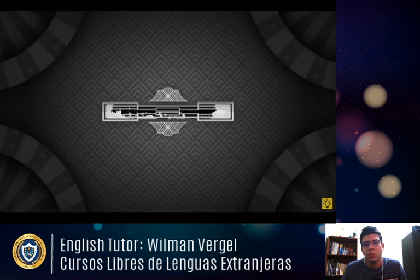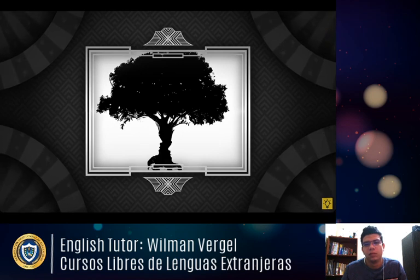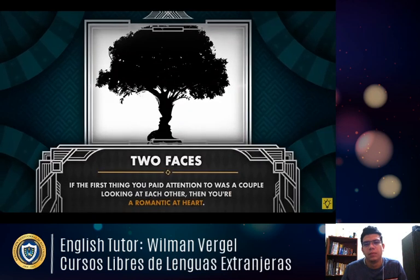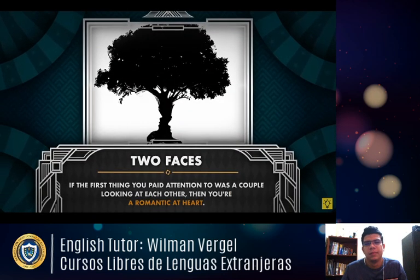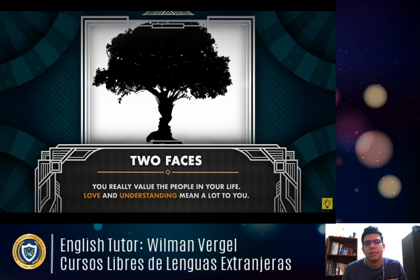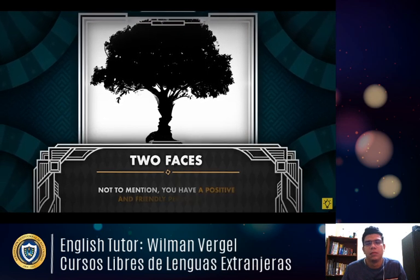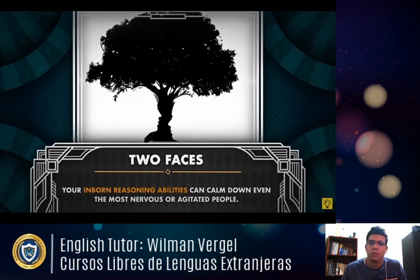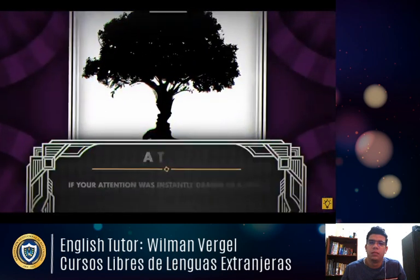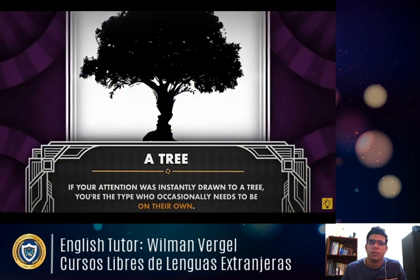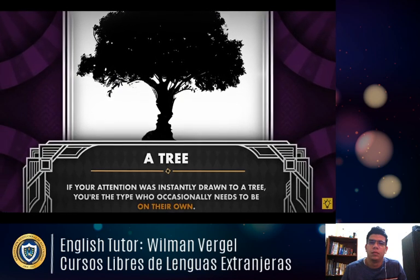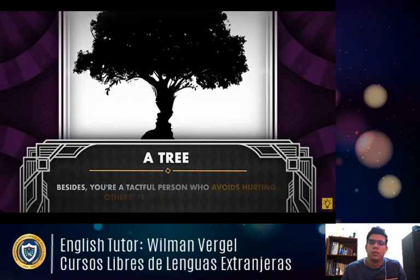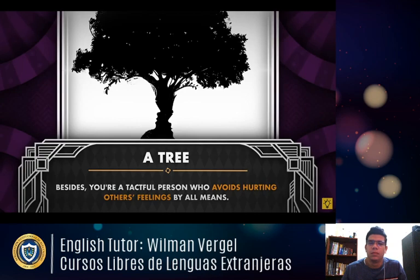Number five — what did you see first? Two faces — if you paid attention to a couple looking at each other, you're a romantic at heart. You really value the people in your life; love and understanding mean a lot to you. You have a positive, friendly personality, and your inborn reasoning abilities can calm down even the most nervous people. A tree — if your attention was instantly drawn to a tree, you occasionally need to be on your own. You love nature and solitude but don't mind spending time with loved ones. You're also a tactful person who avoids hurting others' feelings.